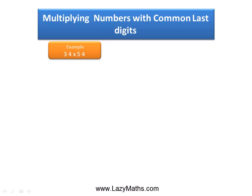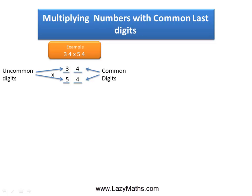Here's an example of multiplying numbers with common last digits: 34 times 54. As you can see, the digits 3 and 5 are the uncommon digits between 34 and 54, and the digits 4 and 4 are the common digits.